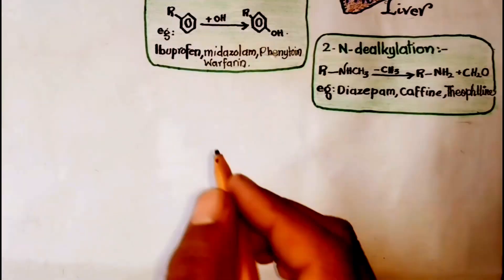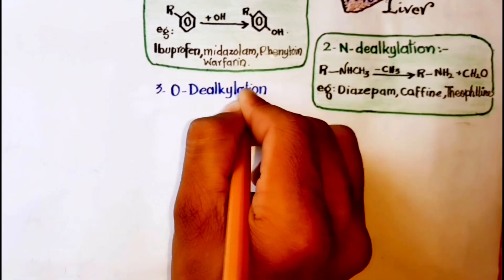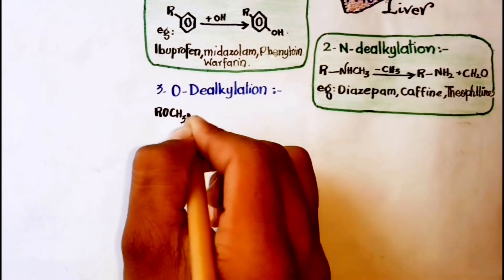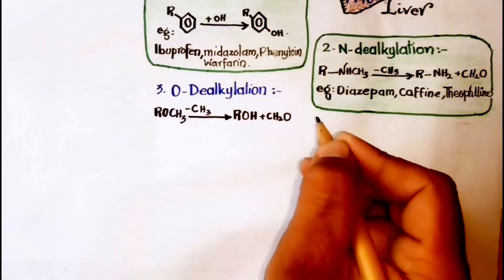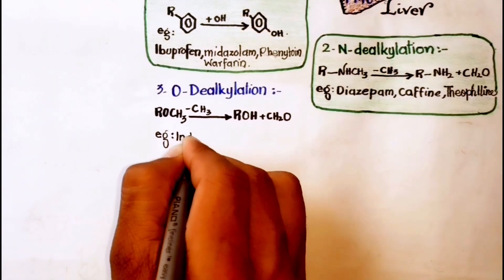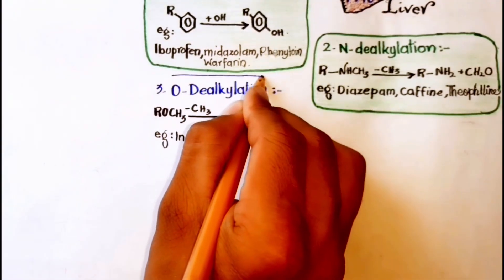Next is O-dealkylation. This reaction involves the removal of an alkyl group attached to an oxygen atom of the drug molecule. Indomethacin and dextromethorphan undergo metabolism by O-dealkylation.